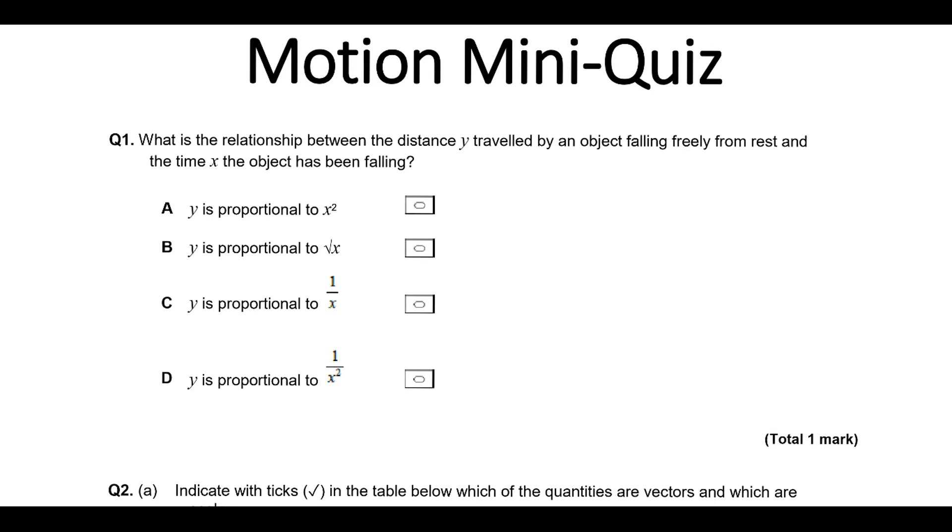All right, so let's have a look at reviewing the motion mini-quiz. To start with, we want the relationship between distance y and the time x for an object that's been falling.